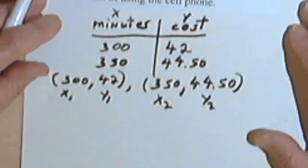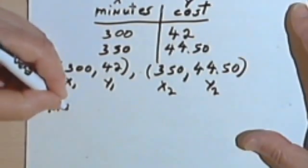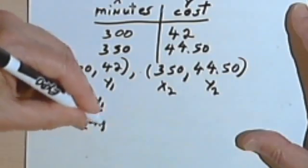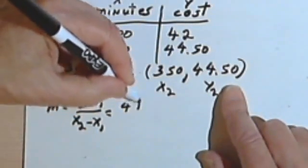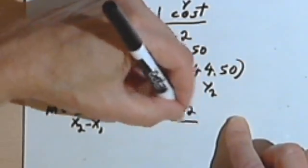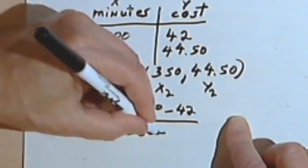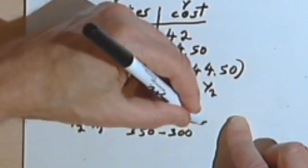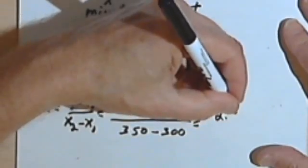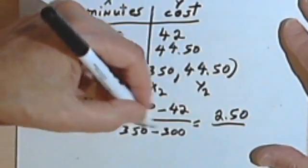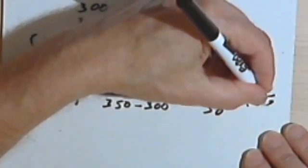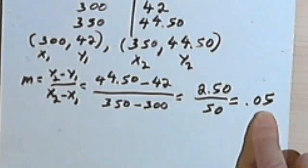So I can find the slope. The slope, y sub 2 minus y sub 1 over x sub 2 minus x sub 1, is going to be 44.50 minus 42 over 350 minus 300. So 44.50 minus 42 is 2.50, and 350 minus 300 is 50. And if you work this out, you find it comes to 0.05. So my company's charging me 5 cents a minute.